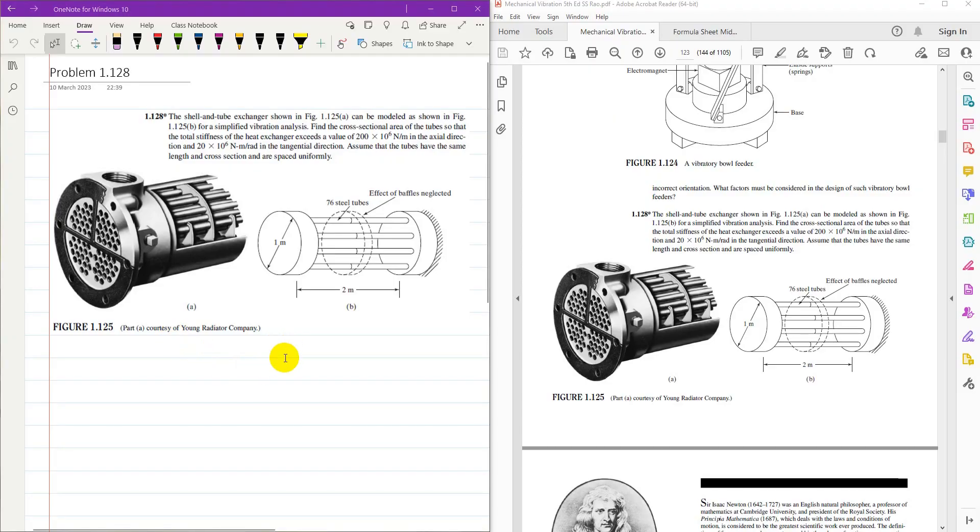The statement of the problem is the shell and tube heat exchanger shown in figure 1.125a can be modeled as shown in figure 1.125b for simplified vibration analysis. Find cross sectional area of the tube so that the total stiffness of heat exchanger exceed a value of 200 into 10 to the power 6 newton per meter in axial direction.